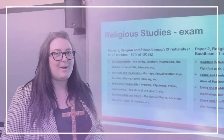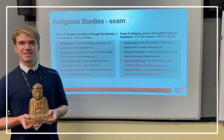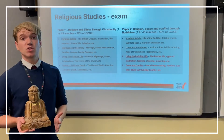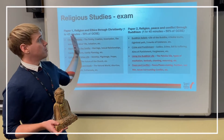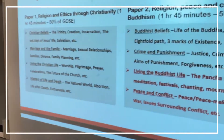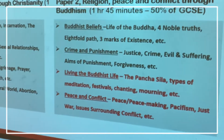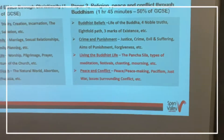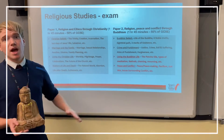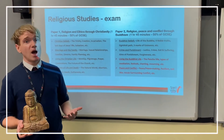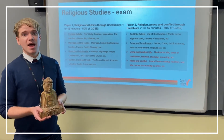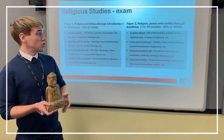Mr Granger, can you tell us what is on Paper 2 please? Absolutely. On Paper 2, which is everything we've covered in Year 11 so far, we've been looking at Buddhist beliefs — focusing on the life of the Buddha, the Four Noble Truths, the Eightfold Path, and the Three Marks of Existence. We've just started focusing on crime and punishment, looking at Buddhist views on justice, peace, the aims of punishment, and forgiveness.